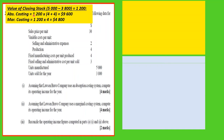It is recommended that you value the closing stock before you attempt any other part of the question. In this case we have 1,200 units as the closing stock — 5,000 minus 3,800 — and we get that from over here.